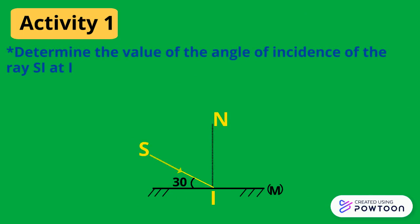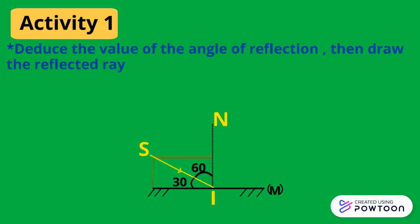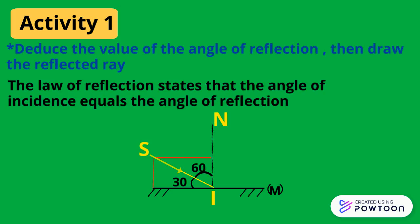Determine the value of the angle of incidence of the ray SI at I. The angle of incidence equals 90 minus 30 equals 60 degrees. Deduce the value of the angle of reflection. The law of reflection states that the angle of incidence equals the angle of reflection, so i equals r equals 60 degrees.